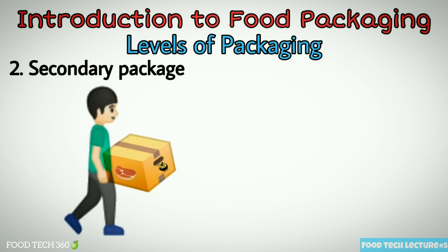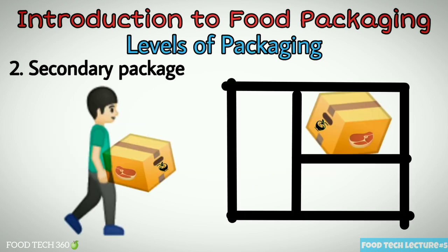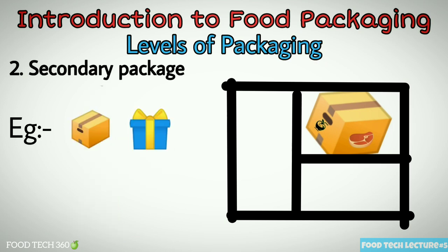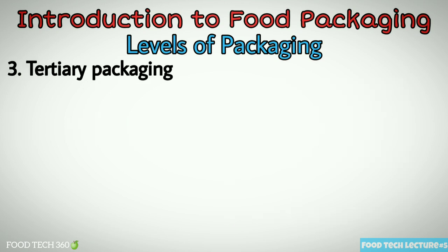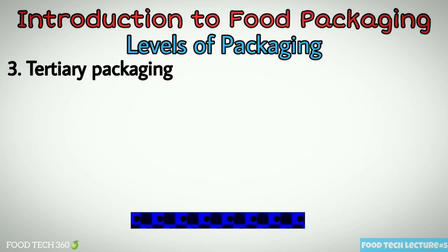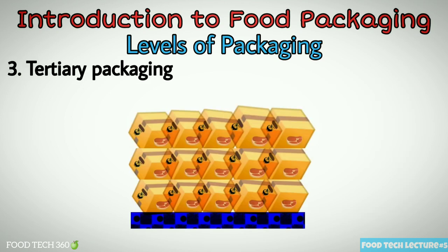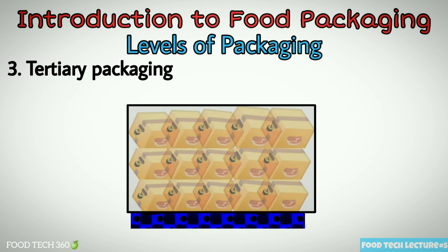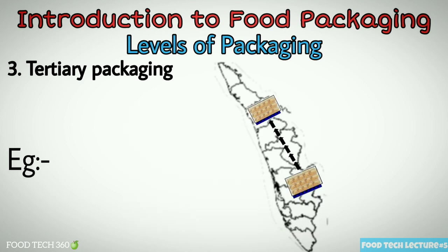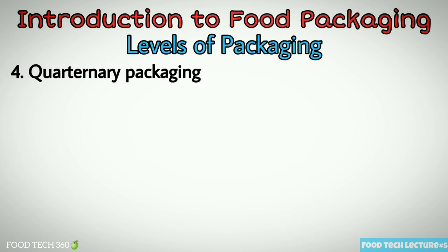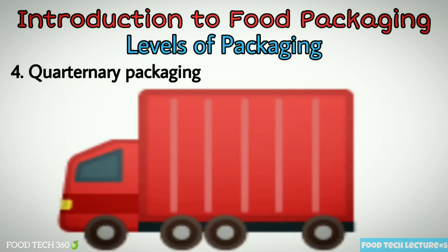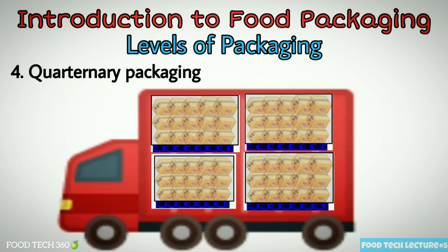Secondary package: they contain a number of primary packages and are the physical distribution carriers. They can be used in retail outlets for the display of primary packages. Example: corrugated cases. Tertiary packaging: made up of a number of secondary packages, used for district or state level distribution.